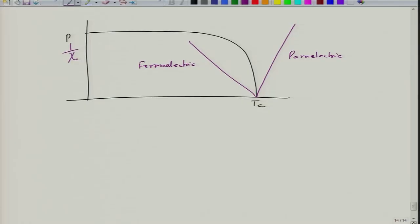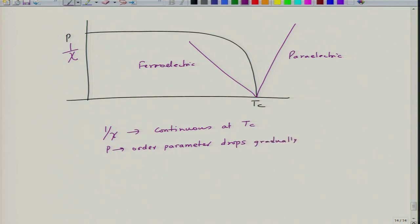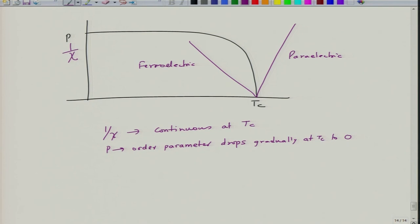In the second-order transition, 1 over chi is continuous at Tc. Polarization, which is the order parameter, drops gradually to zero at Tc. It is the second derivative of free energy that is discontinuous, not the first derivative. As a result, there is no evolution of latent heat, and the second derivative of free energy — which is the specific heat — is discontinuous.